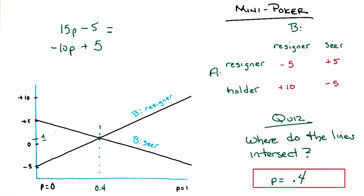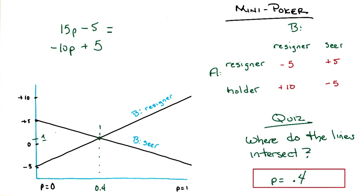Now, you might ask yourself: what if B decides to also do a mixed strategy? Of course it changes something, but it doesn't change the value of the game. Because if B is a resigner, A is getting 1 on average. If B is a seer, A is getting 1 on average. And any convex combination of 1 and 1 is going to give us 1.